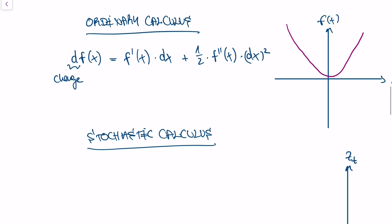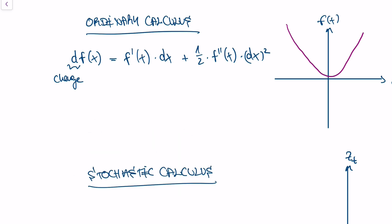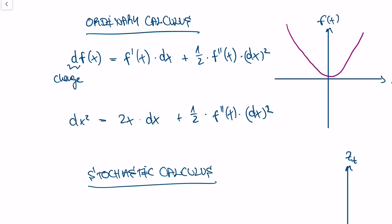Let me give a concrete example. Let's say the function is x squared. The change in the value of x squared is given by the first derivative, which is 2x, times the change in the variable x, plus one-half times the second derivative of the function times the change in x squared. But here's a catch.